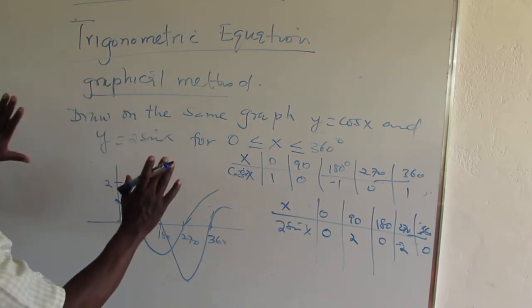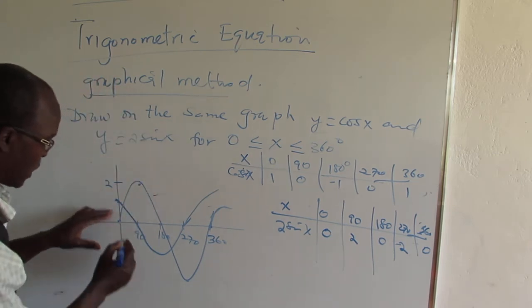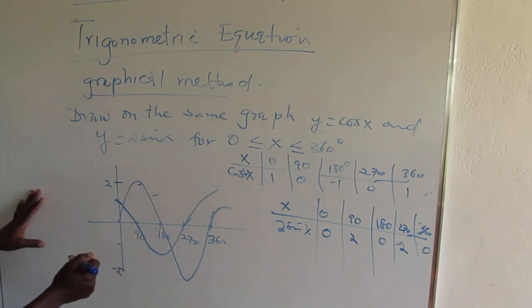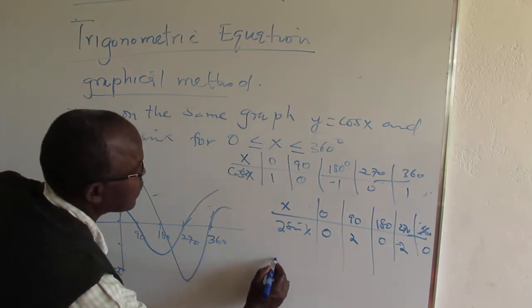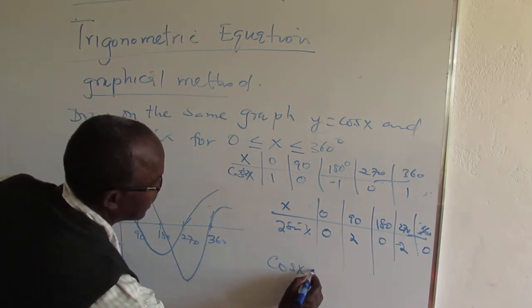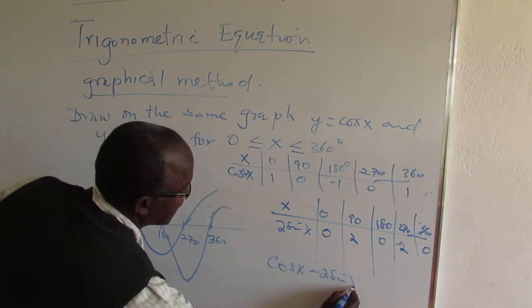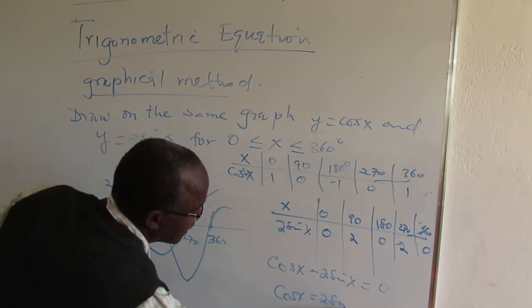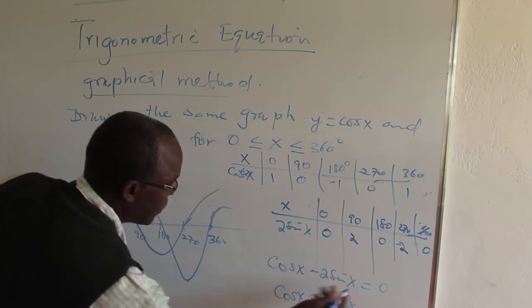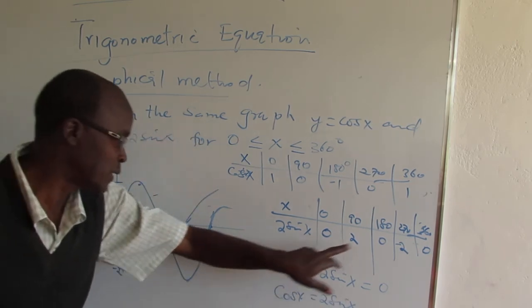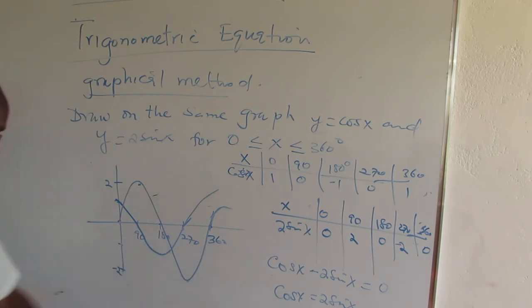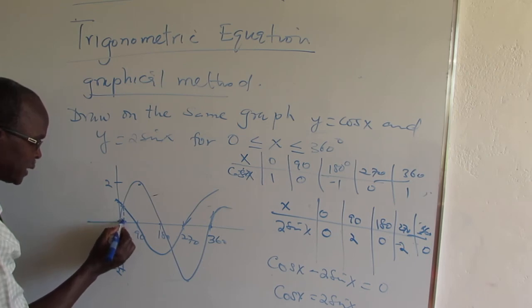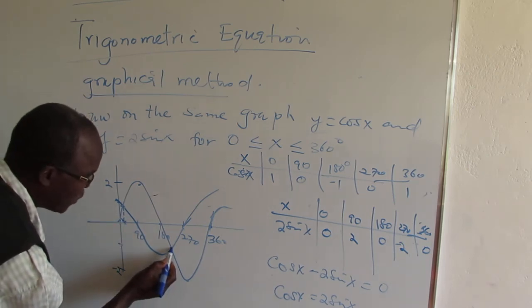Now instead of solving, you can use the graph to solve. One way of solving is where the two graphs meet. Because you'll be asked to solve the equation cos x minus 2 sine x equals 0, or it is written cos x equals 2 sine x. Look for where they are meeting and come down to the x axis and read at that point.